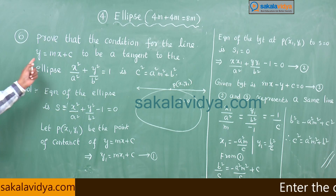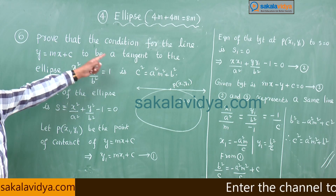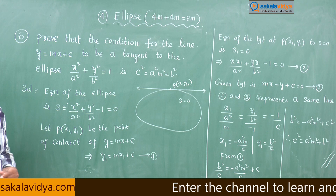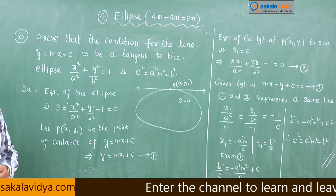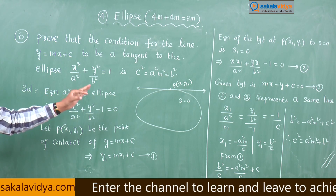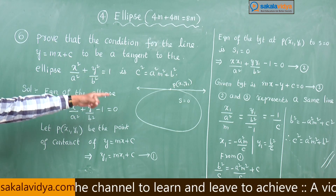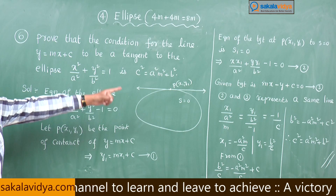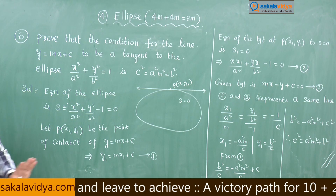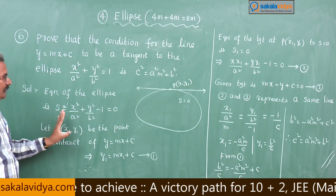So, for y = mx + c to be a tangent to the ellipse x²/a² + y²/b² = 1, the condition is c² = a²m² + b².